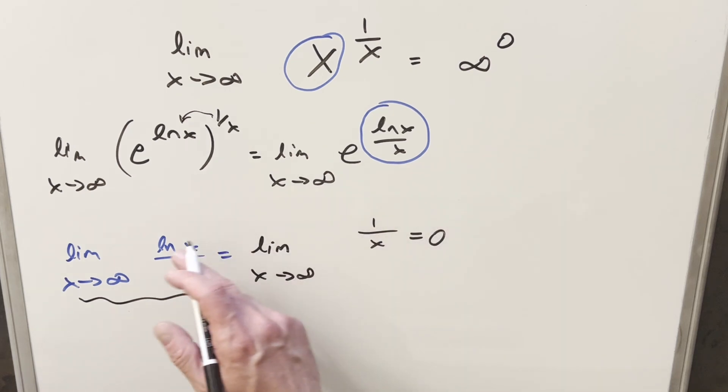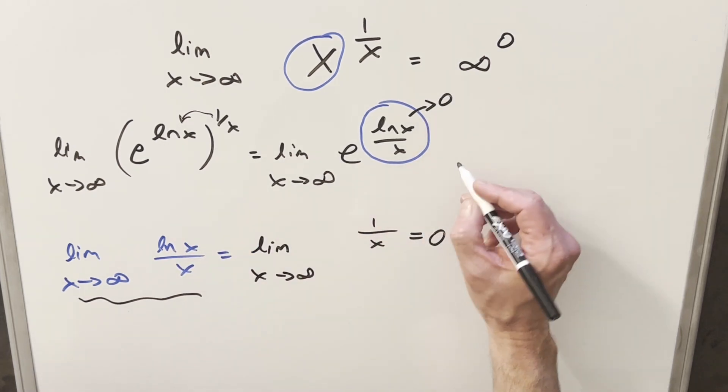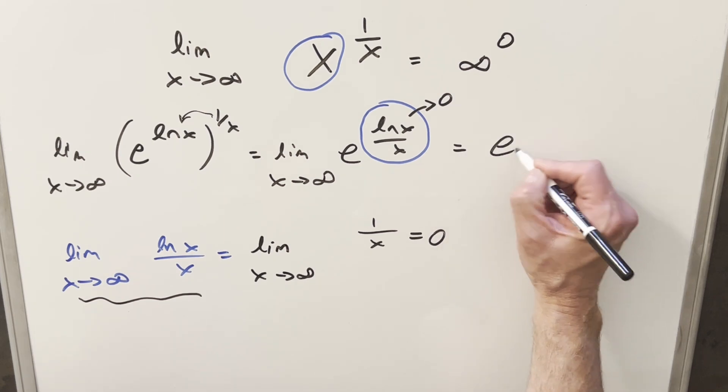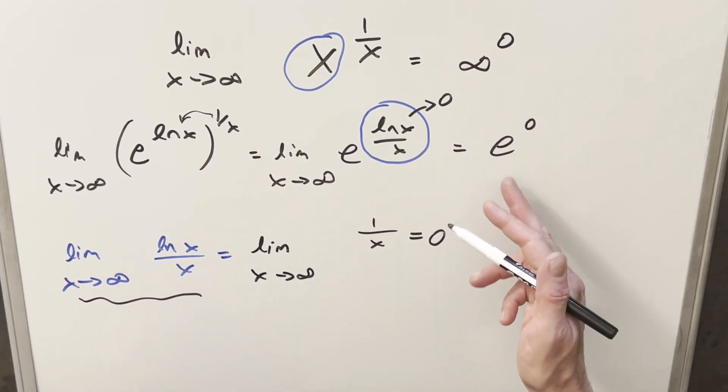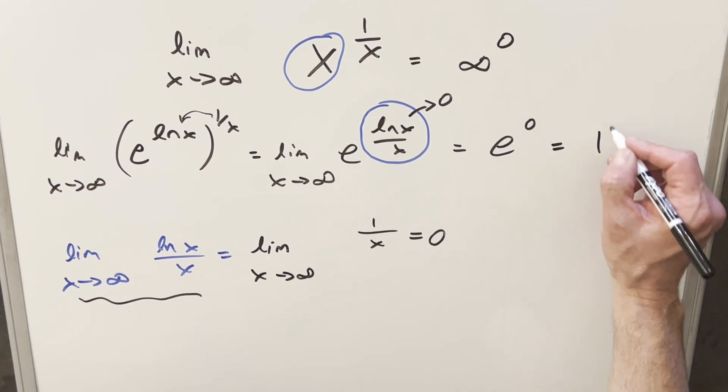So coming back to our main problem, the limit as x approaches infinity of this exponent is going to 0. So this simplifies to e to the 0. We can calculate e to the 0, and so for my final solution, it's just 1.